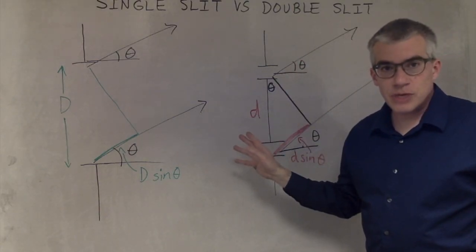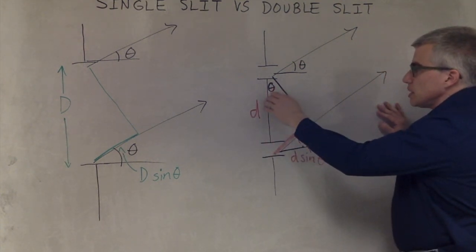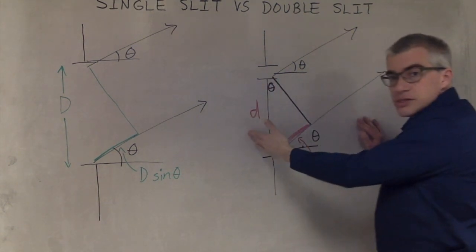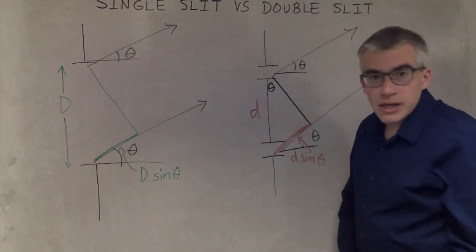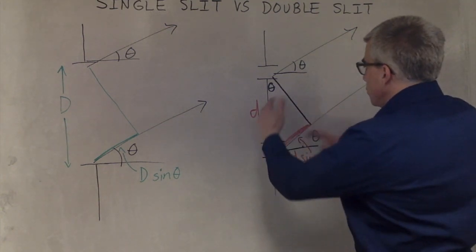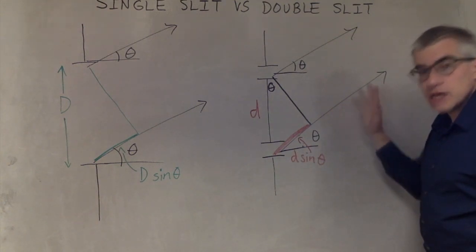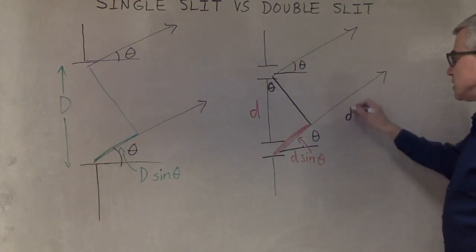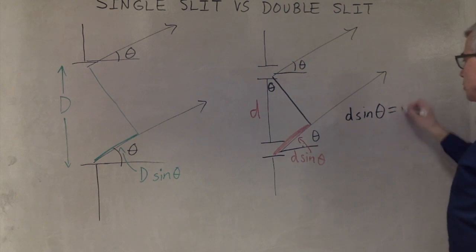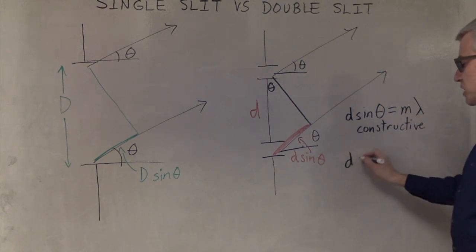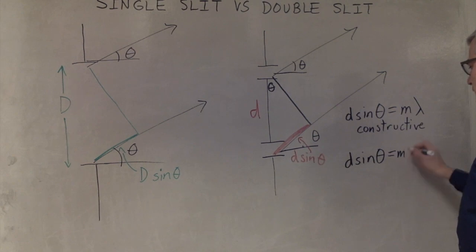The double slit diffraction, which I covered in another video: you have two slits. Light is coming in phase, passing through the two slits, and then diffracting off in various directions. We want to know where it's going to be constructive and where it's going to be destructive. If it's going off at an angle theta, we use d sin theta equals m lambda for constructive, and d sin theta equals m plus a half lambda for destructive.